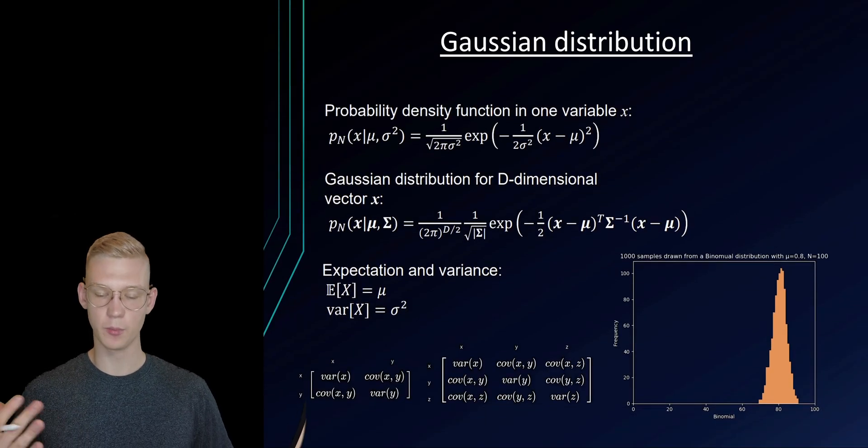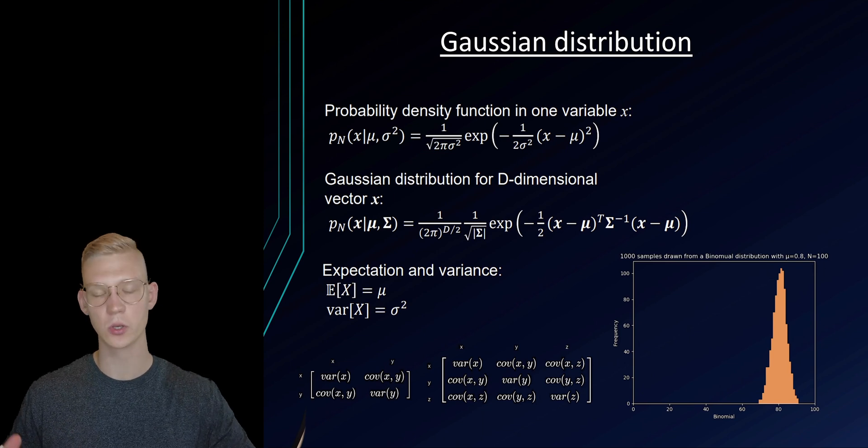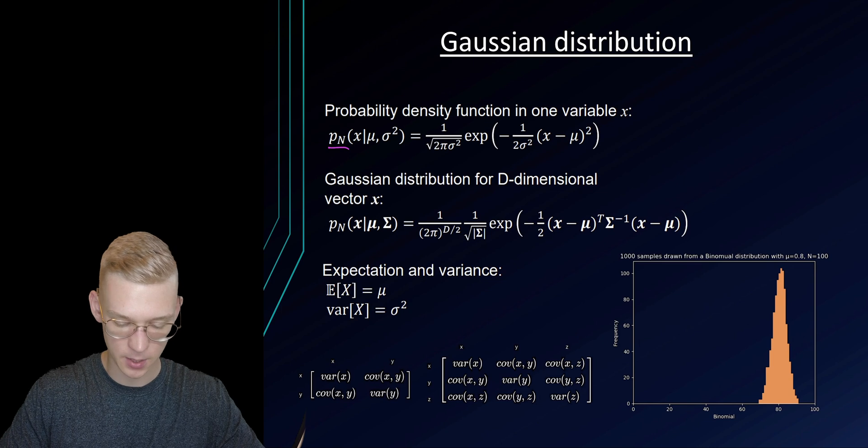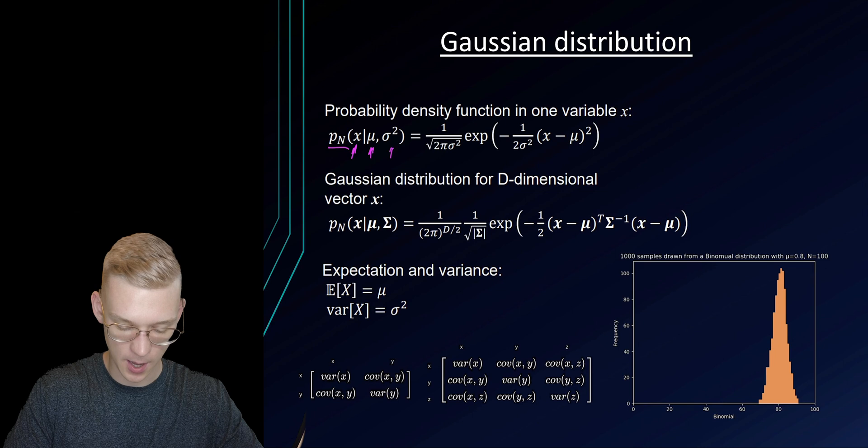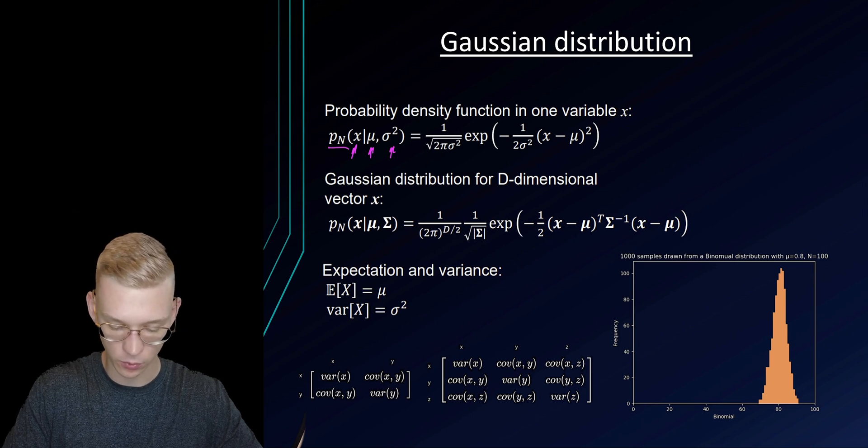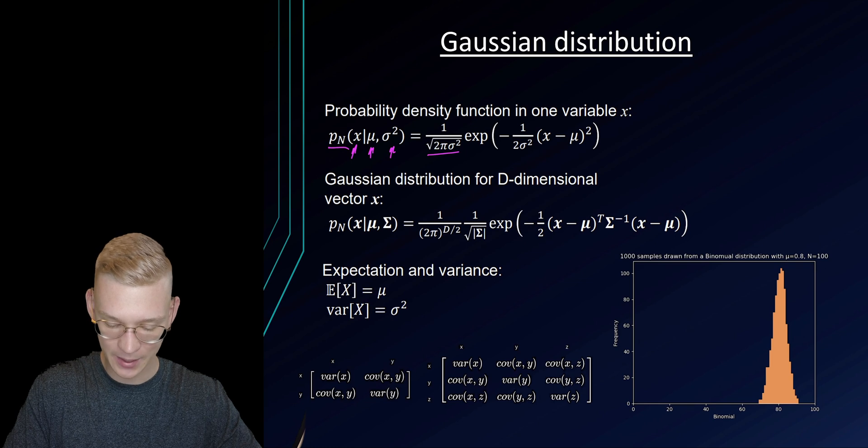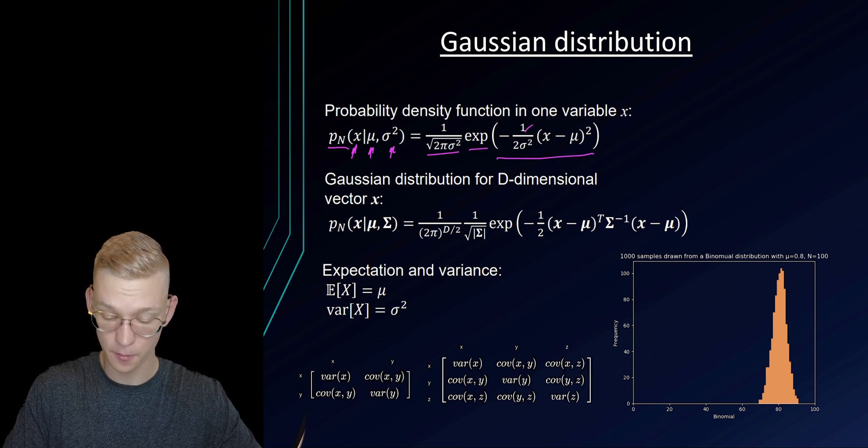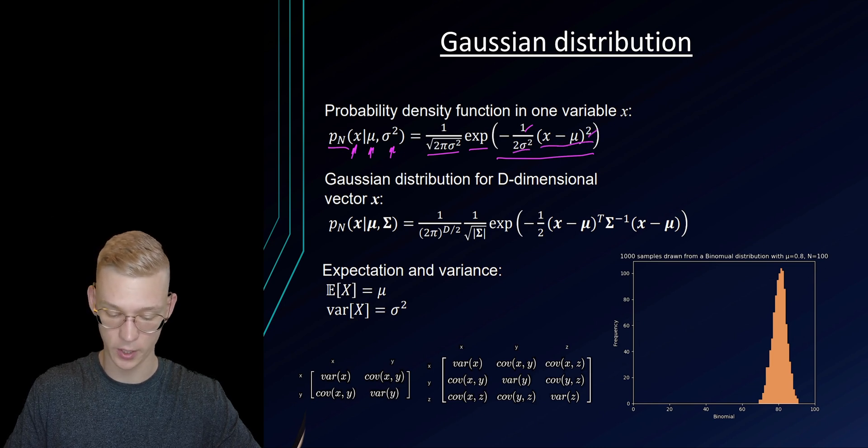And now to the most important distribution which is the Gaussian distribution, also called the normal distribution. The probability of x given mu and sigma squared is equal to 1 over square root 2 pi sigma squared times e to the power of minus 1 divided by 2 sigma squared times x minus mu squared.